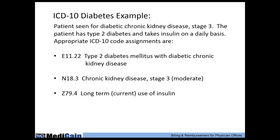Here's an example of a diabetes presentation using multiple codes. For a type 2 diabetic with chronic kidney disease on insulin, this translates into three ICD-10 codes: E11.22 designates type 2 diabetes with diabetic chronic kidney disease; N18.3 tells us the chronic kidney disease is stage 3; and Z79.4 tells us this patient uses insulin on a recurring basis.